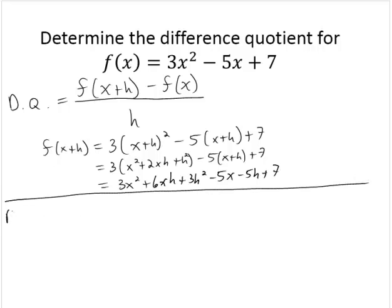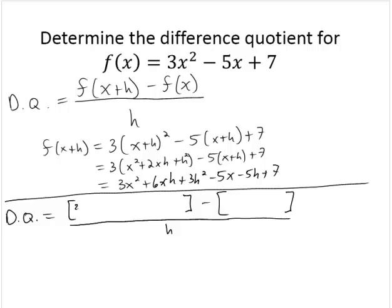So then the difference quotient would be equal to — I'd like to put brackets around the first expression and brackets around the second expression in the numerator. In the first brackets: 3x² + 6xh + 3h² - 5x - 5h + 7, subtract the original function 3x² - 5x + 7, all divided by h.